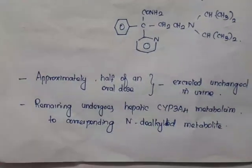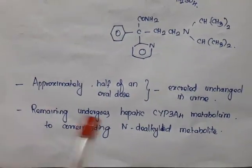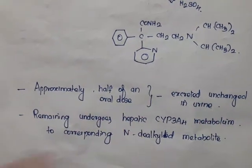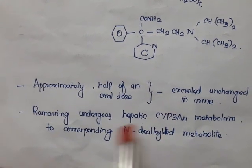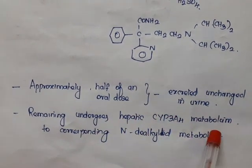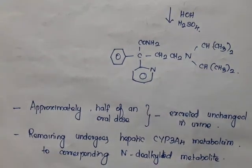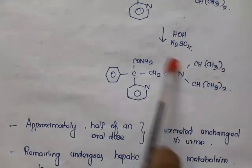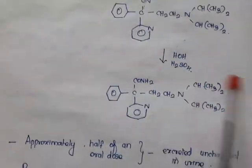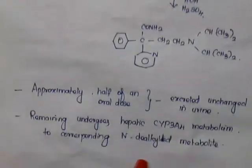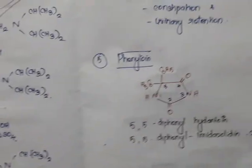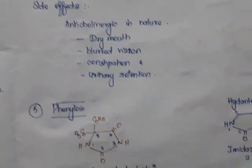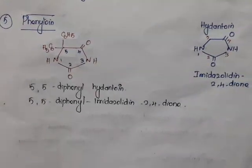Regarding disopyramide's pharmacokinetics, half of the oral dose is excreted unchanged in the urine, so patients with renal insufficiency should be monitored carefully. The remaining portion undergoes hepatic metabolism to the corresponding N-dealkylated metabolite, where one of the two isopropyl groups is removed. Side effects include dry mouth, blurred vision, constipation, and urinary retention.